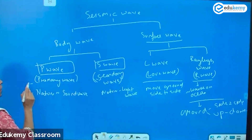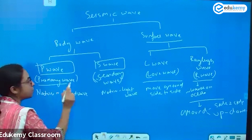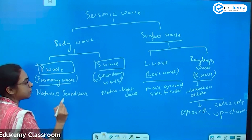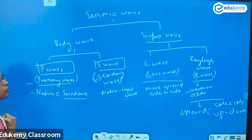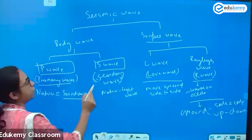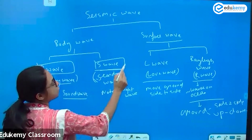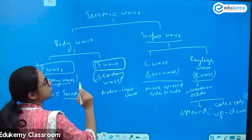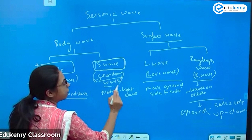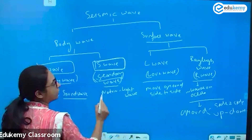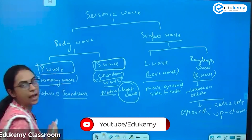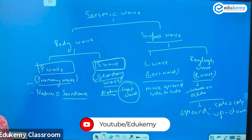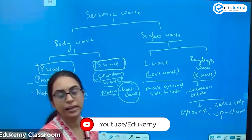The P wave is the primary wave and its nature is similar to that of the sound wave. Then in the body waves, we have the S wave, called the secondary wave, and its nature is like the light wave.